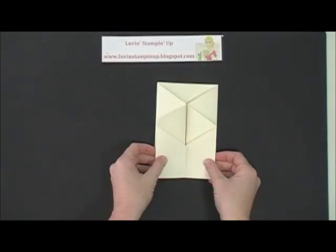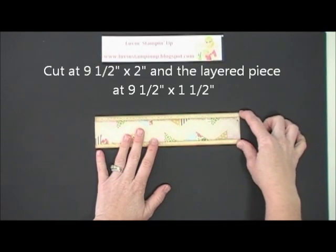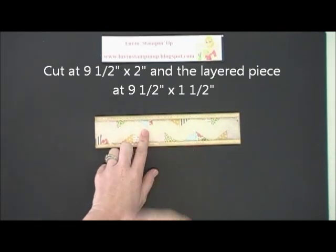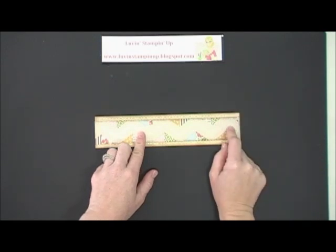And then to make the belly band, I simply cut a piece of designer series paper at two inches by nine and a half, and then layered a second piece on top. And it's cut at one and a half by nine and a half.